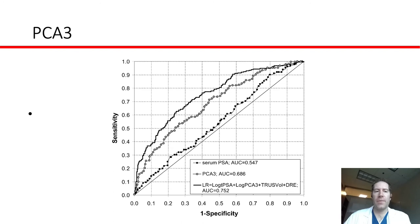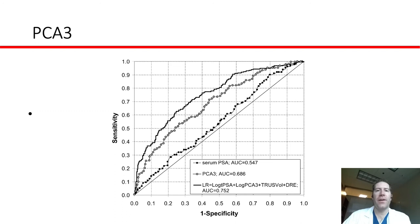What if we evaluated PCA3 over the spectrum of cutoffs, not just the chosen cutoff of 35? You'd do an ROC curve and calculate the area under the curve. The solid black line is the ROC plot for PSA alone — it's actually close to 0.5, at 0.547. PCA3 performed much better in this study at 0.686. When combining PSA, PCA3, and other clinical factors, the AUC improved even further to 0.752. This demonstrates that PCA3 across a range of thresholds is likely better at detecting prostate cancer than PSA alone, at least in this population.